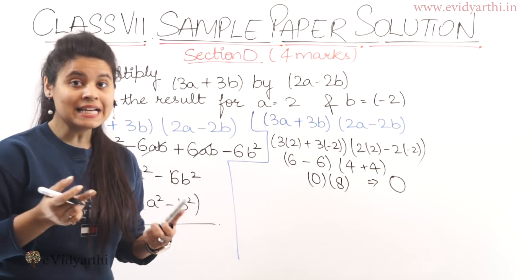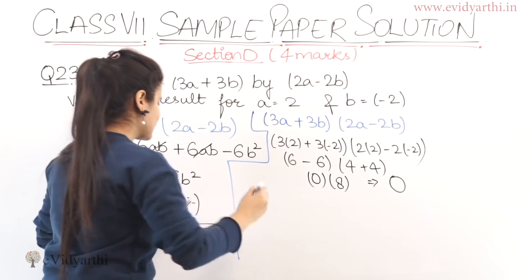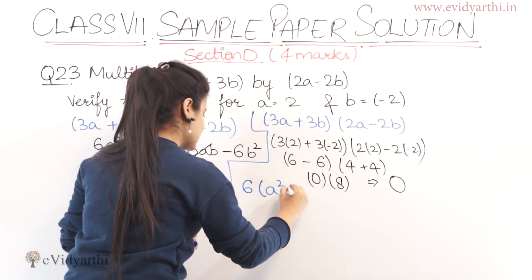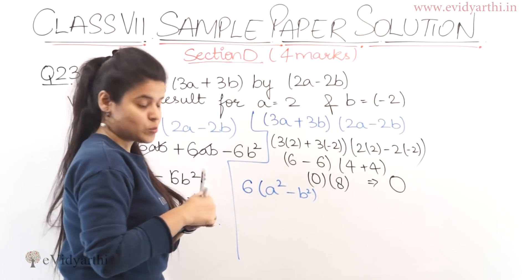So my first answer is zero. Now we have to see what we have found. Does that also give zero? Let's see. We have to multiply this by 6a square minus 6b square. So we put a and b values.